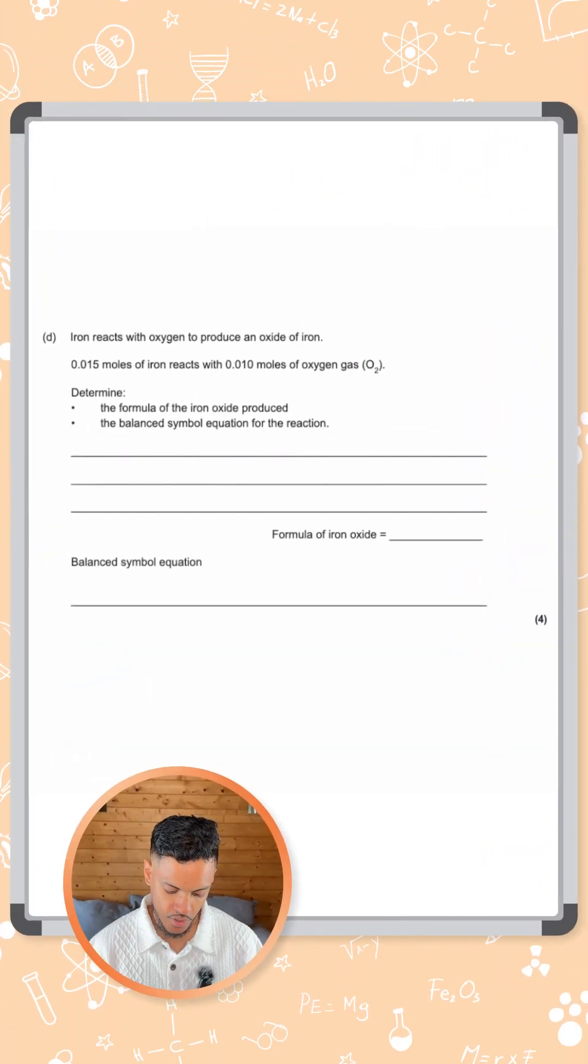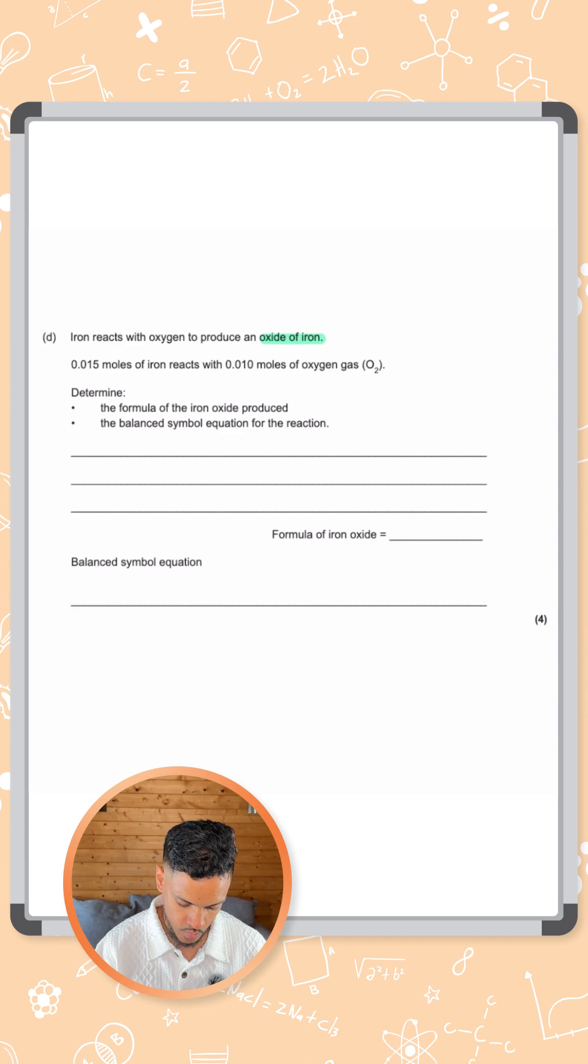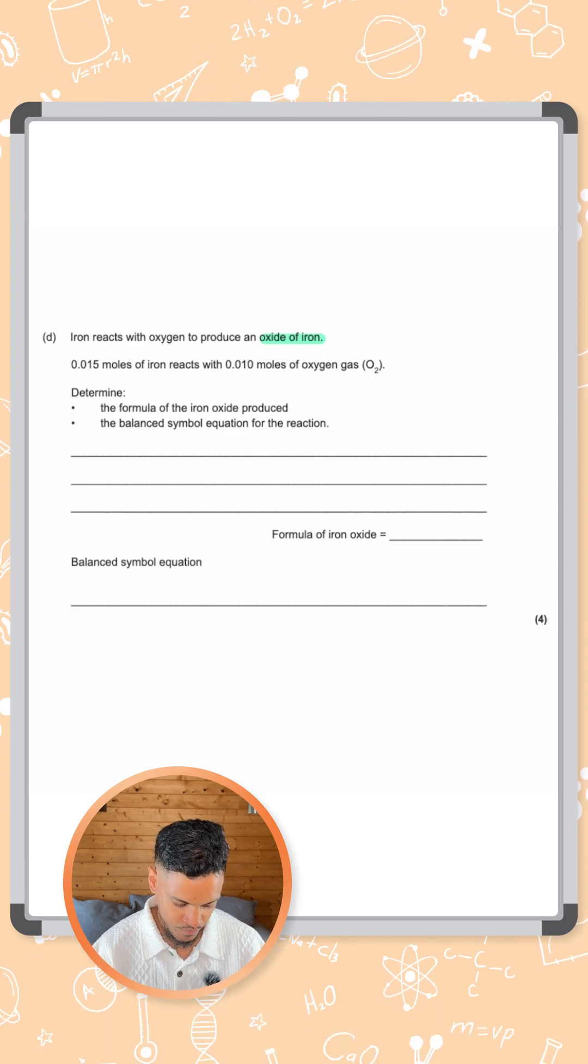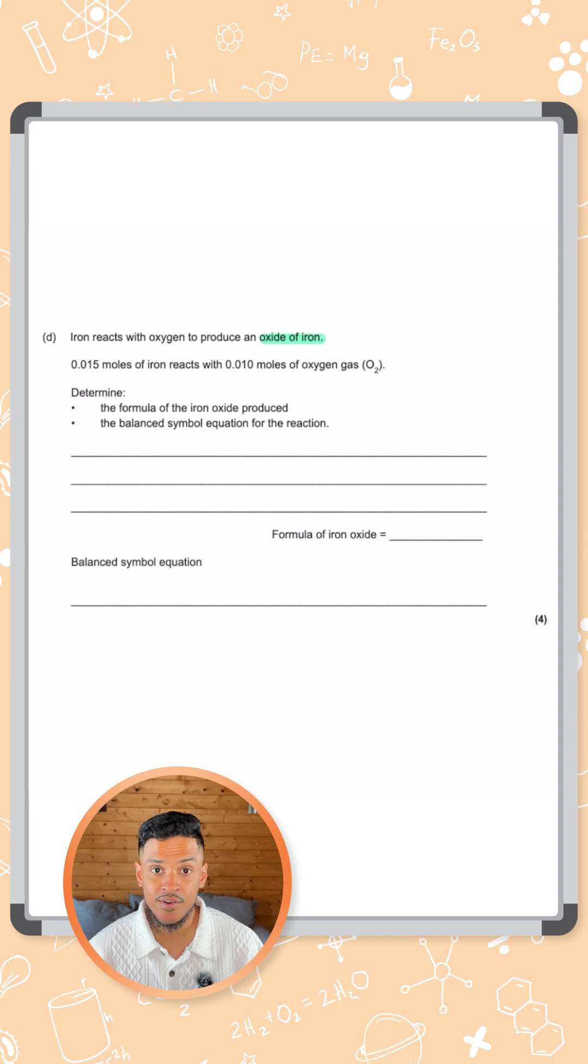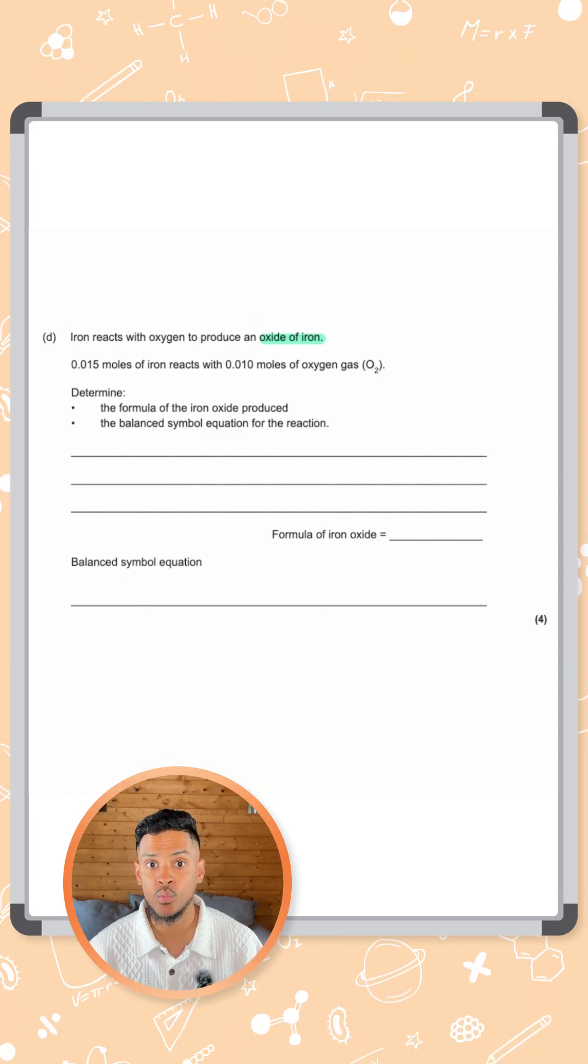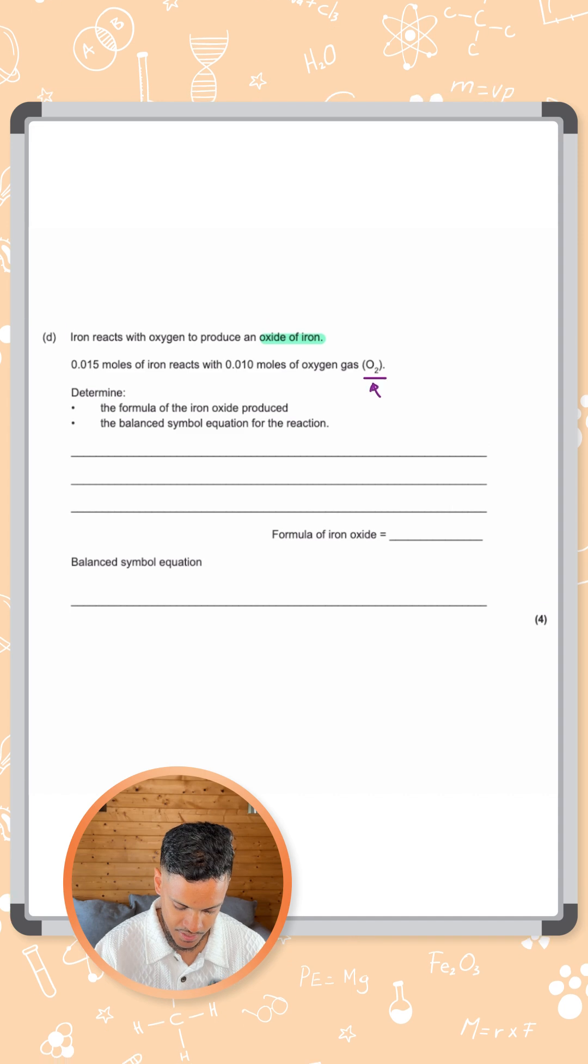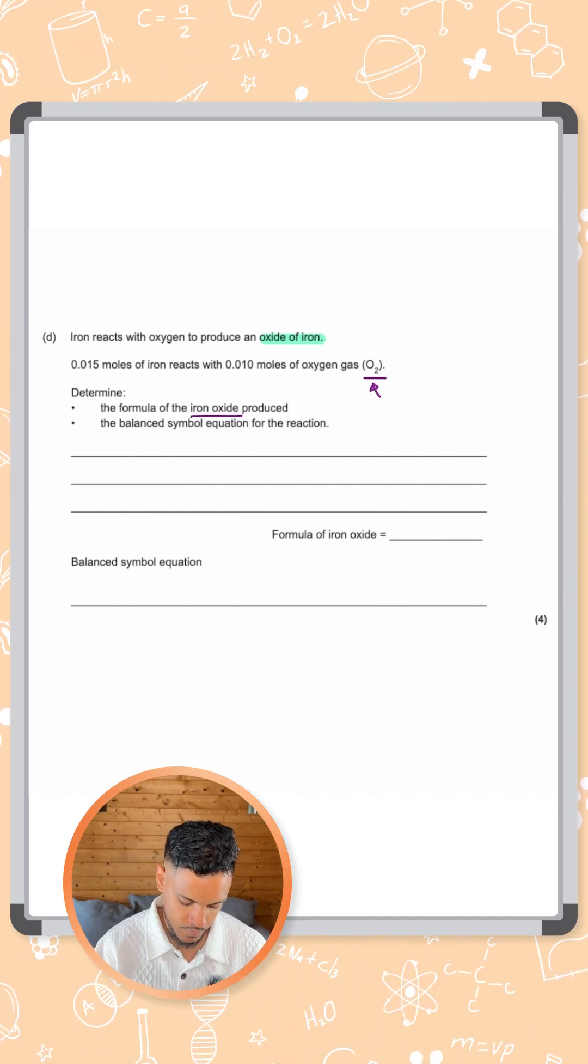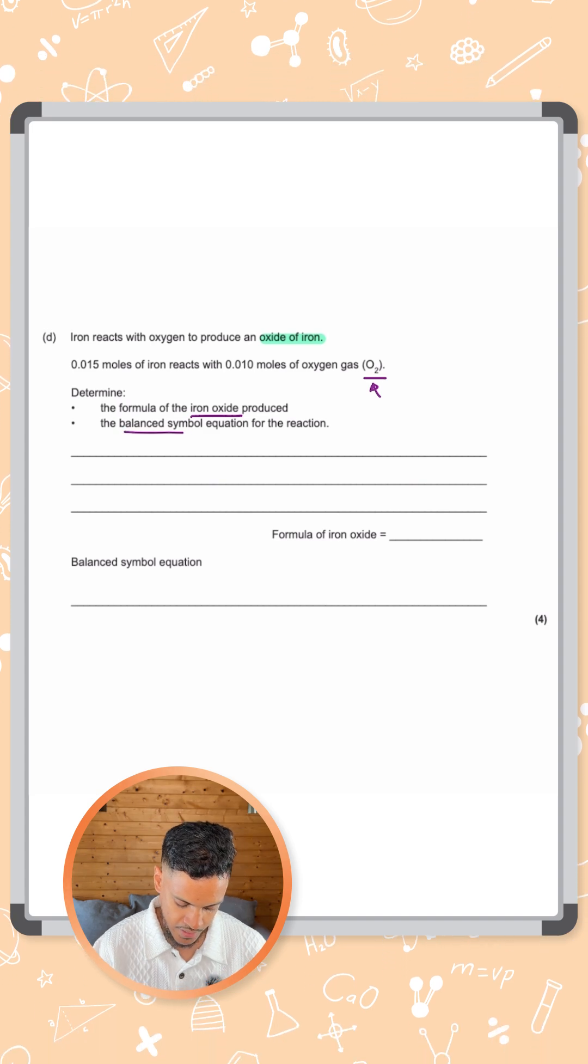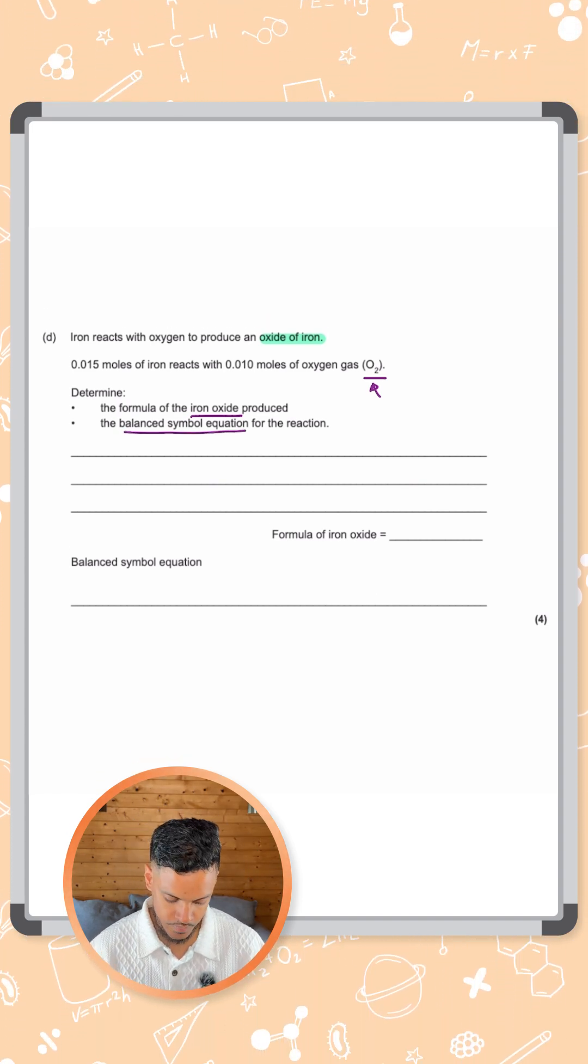This question says iron reacts with oxygen to produce an oxide of iron. We're not told what the formula of that is. It says below that 0.015 moles of iron reacts with 0.01 moles of oxygen gas. They've been clear here to say O2. It says determine the formula of the iron oxide produced and then write the balanced symbol equation for the reaction.